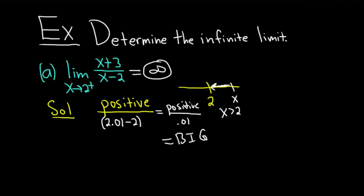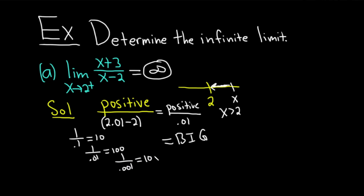To reinforce this: whenever the bottom is small, the whole fraction is big. For example, 1 / 0.1 = 10; 1 / 0.01 = 100; 1 / 0.001 = 1,000. So whenever the denominator is small, the whole fraction is going to be large.